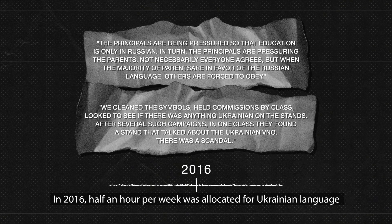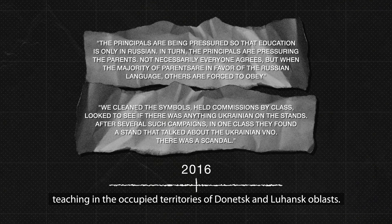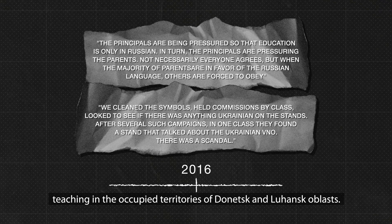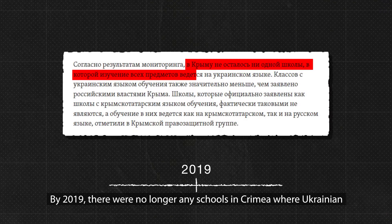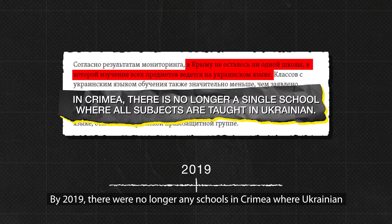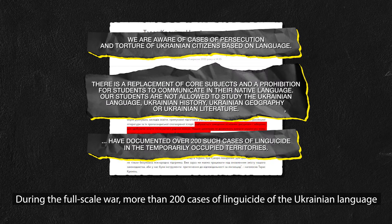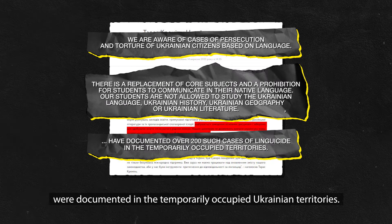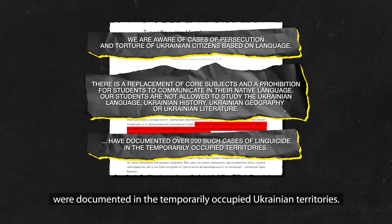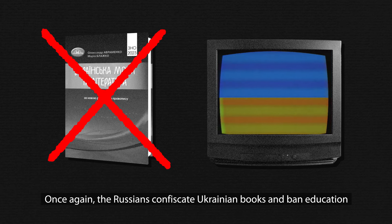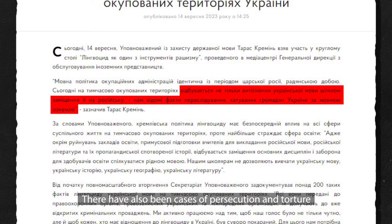In 2016, only half an hour per week was allocated for Ukrainian language teaching in the occupied territories of Donetsk and Luhansk oblasts. By 2019, there were no longer any schools in Crimea where Ukrainian could be learned. During the full-scale war, more than 200 cases of linguicide of the Ukrainian language were documented in the temporarily occupied Ukrainian territories. Once again, the Russians confiscate Ukrainian books, ban education in Ukrainian, and are replacing Ukrainian television with Russian. There have also been cases of persecution and torture of Ukrainian citizens for using the Ukrainian language.